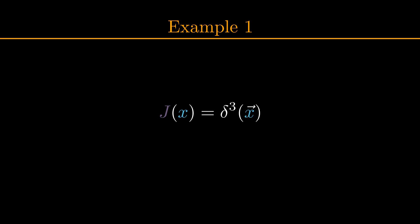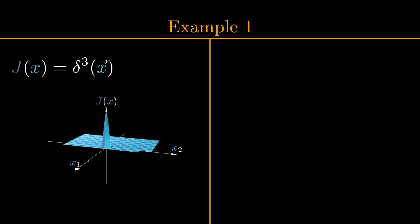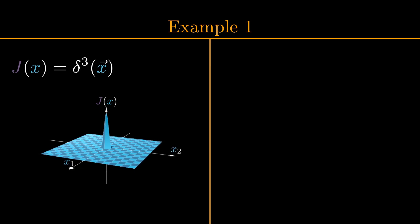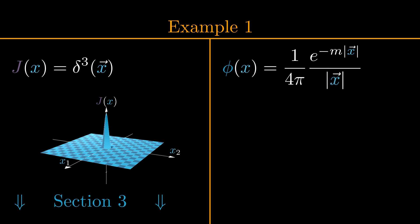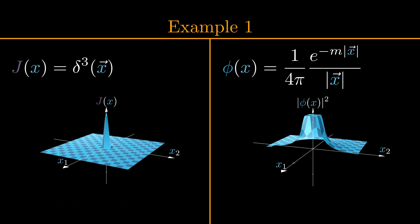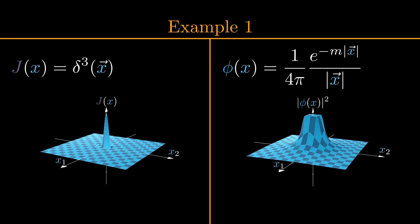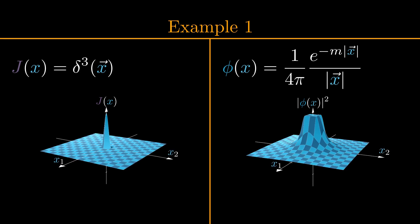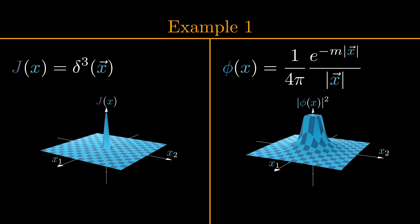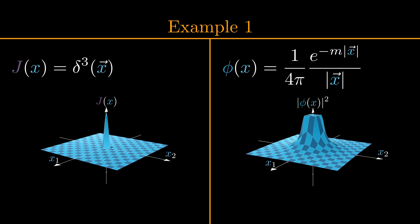In our first example, we set our source equal to a delta function of the spatial coordinates x. This means we have a source that is located at the origin, at x equals 0, but it lasts for all times t since it has no t dependence. Given our field function as a function of this source term, I worked out the integral in section 3 of my document, and the result is the following. The obtained field function is radially symmetric, and decays exponentially with increasing distance from the origin, and it gives exactly the so-called Yukawa potential. Since there is no time dependence in this field, it is not very interesting yet, but it will become more interesting once we add interaction terms in our action later on.